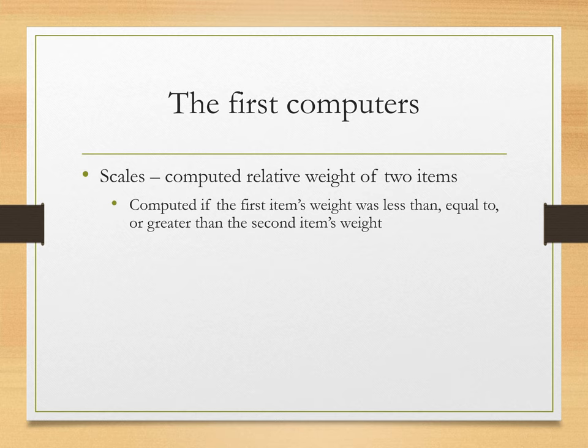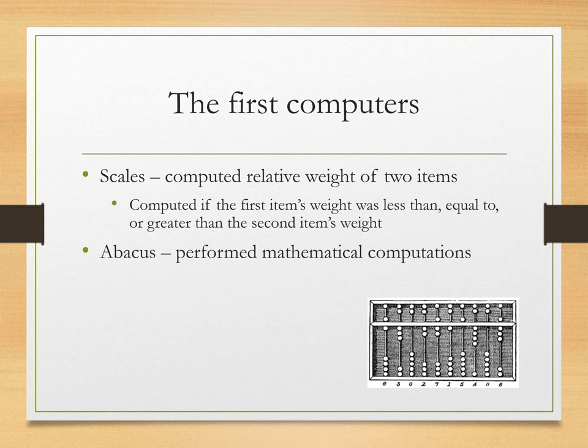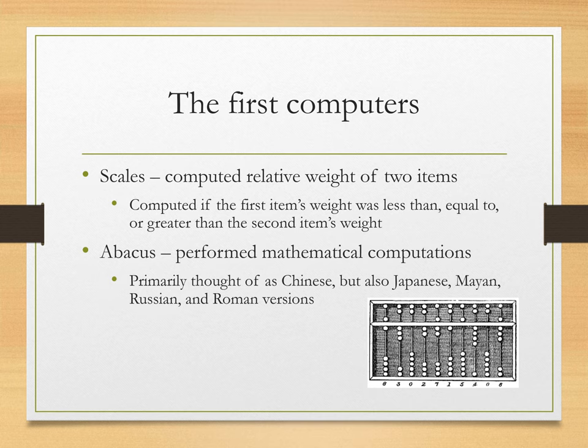The second type of computer is going to be your abacus, and the idea with this is to perform mathematical computations. You can see a picture of the abacus in your lower right corner. The abacus was primarily thought of as Chinese, but there also exist Japanese, Mayan, Russian, and even Roman versions. It can do your basic addition, subtraction, and other basic mathematical operations, but it's also able to do square roots and cube roots.